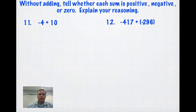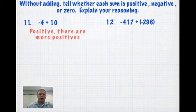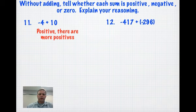Without adding, just looking at the problem, state whether each sum—remember sum is an answer to an addition problem—is positive, negative, or 0, and explain your reasoning. So take a moment and decide what the answers are. Just positive, negative. You don't need to do any work. Just what do you end up with. So for number 11, you should end up with a positive, because there's more positives. For number 12, you should end up with a negative, since you have two negatives to start with.